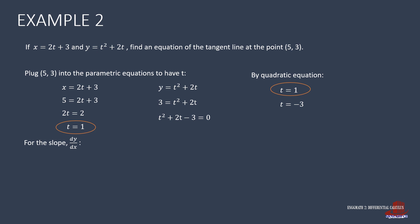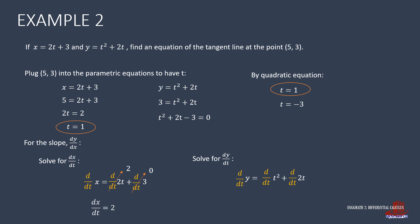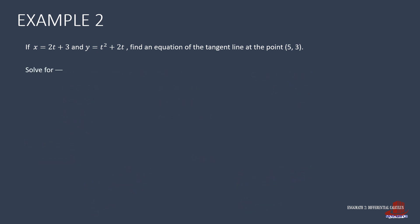Next, we find the slope dy/dx by taking derivatives of both parametric equations. dx/dt is the derivative of 2t + 3: the derivative of 2t is 2 and the derivative of 3 is 0, so dx/dt = 2. For dy/dt, the derivative of t² + 2t gives 2t + 2. Dividing dy/dt by dx/dt and canceling the 2s, we get dy/dx = t + 1. With t = 1, the slope is 1 + 1 = 2.